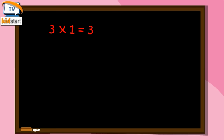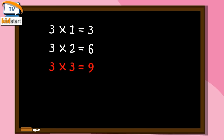Three ones are three. Three twos are six. Three threes are nine. Three fours are twelve.